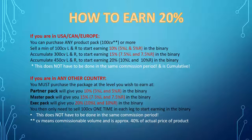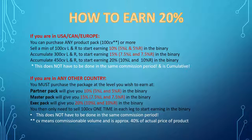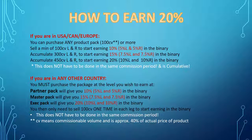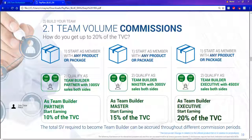If you live in any other country outside the US, Canada, and Europe, you must purchase the package at the level you wish to earn. If you want to earn 10% in the binary, you would purchase the partner pack. If you want to earn at 15% in the binary, you would purchase the master pack. And if you want to earn at 20% in the binary, you must purchase the executive pack. Then the only thing you need to do after that is one time sell 100 CV left and 100 CV right — and that does not have to be done in the same commission period.